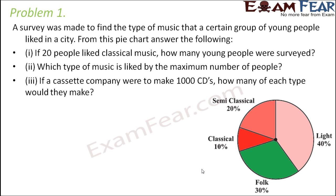You can see a pie chart where 20% of the young people like semi-classical, 10% of them like classical, 30% go for folk, and the remaining 40% prefer light music. The first question is: if 20 people liked classical music, how many young people were surveyed?